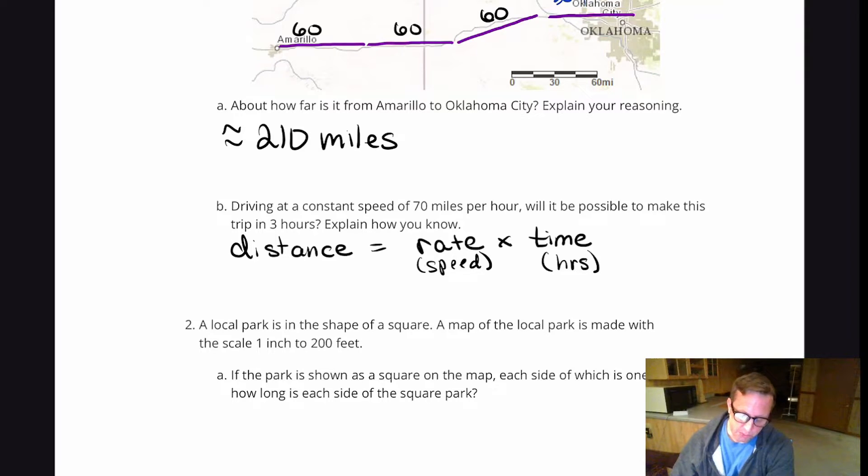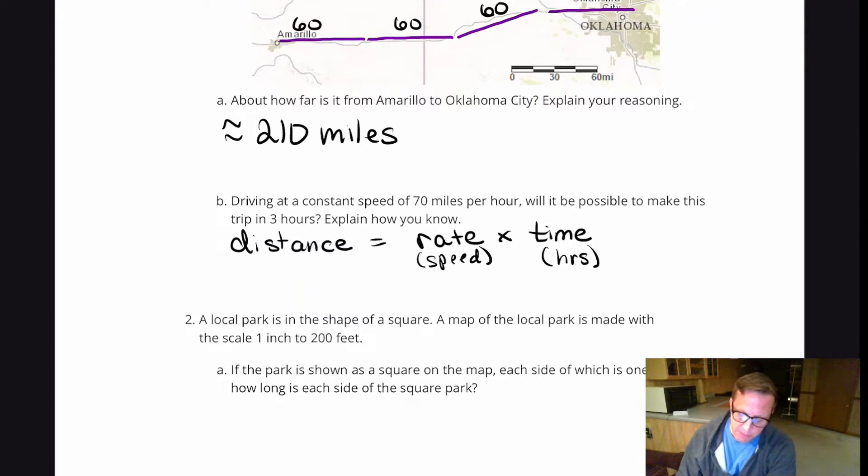So driving at a constant speed of 70 miles per hour, will it be possible to make this in three hours? So if I do 70 times three, well, that's exactly 210. So I'd say yeah, you're cutting it close, but yes.